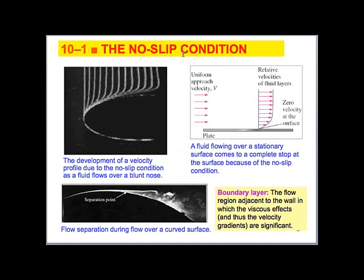The first thing I want to talk about is the no-slip condition. We may observe this in pipe flows and in many other flows as well. Here we have flow over a flat plate, and what you see is that on the interface between our incoming air and the solid surface of the plate, the fluid sticks to the plate — at this interface the velocity is zero.